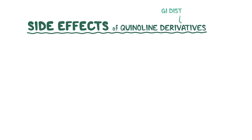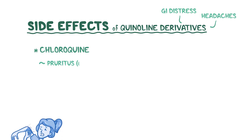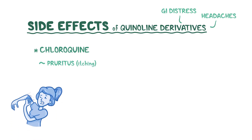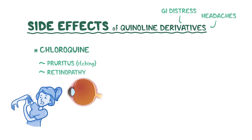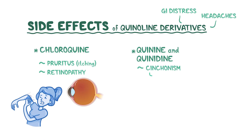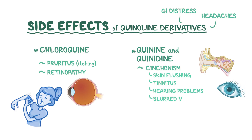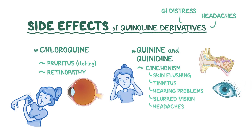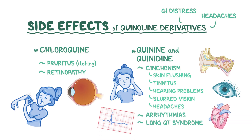Common side effects of quinoline derivatives include gastrointestinal distress and headaches. Chloroquine can cause pruritus, or itching, and if used over long periods of time, it can cause retinopathy that's reversible if the medication is stopped. Quinine and quinidine could cause cinchonism, which includes symptoms like skin flushing, tinnitus or ringing in the ears, hearing problems, blurred vision, and headaches. These medications, especially quinidine, can cause arrhythmias and long QT syndrome, so they should be avoided in people with cardiac problems.